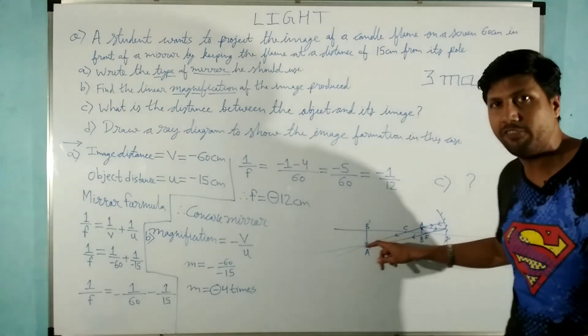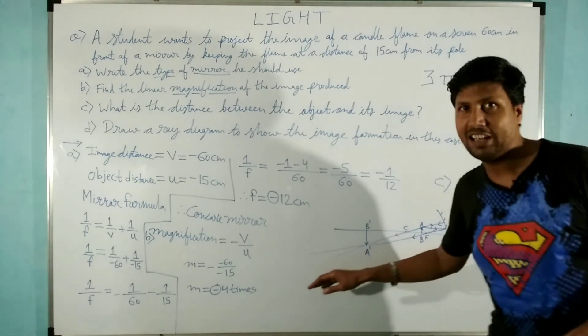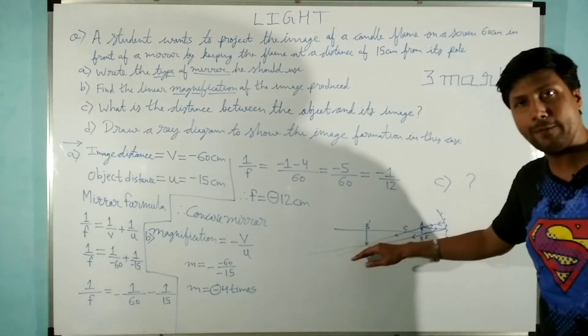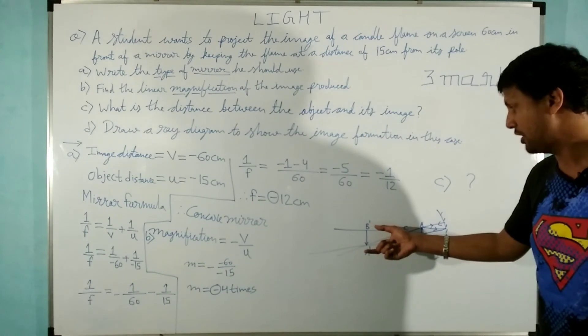It will go straight from the object to mirror and it will come back through the same path as it passes from the center of curvature. So this is the retraceability of path of light. So here is the formation of image.